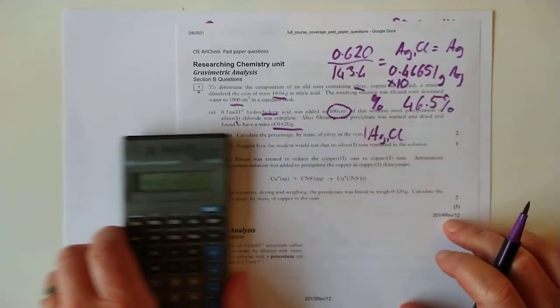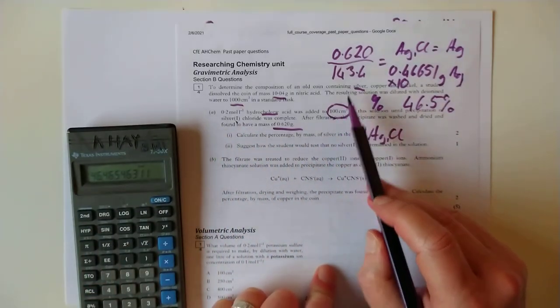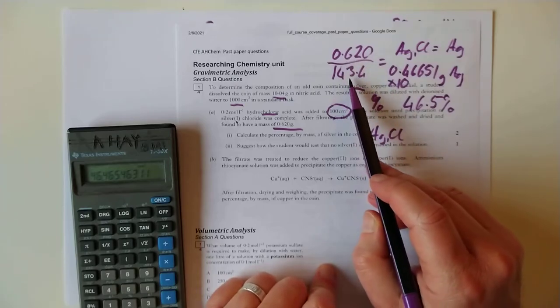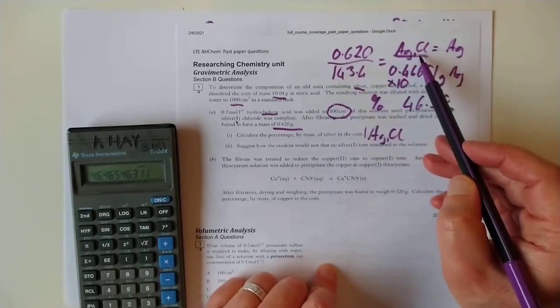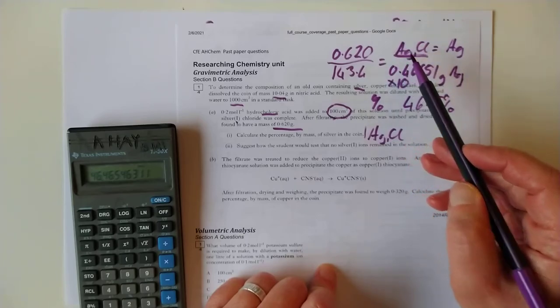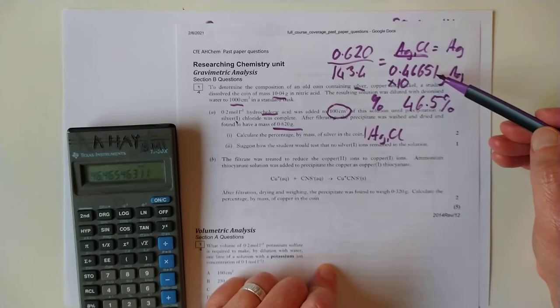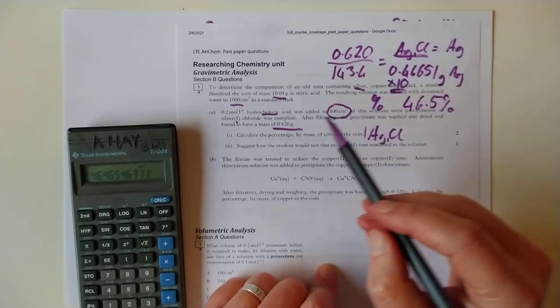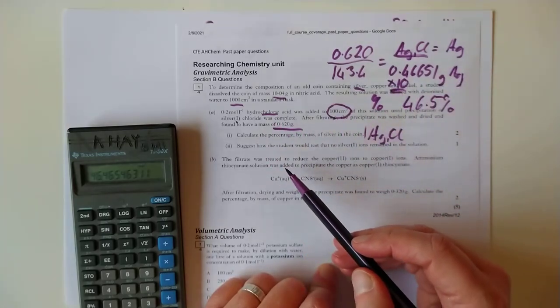If you're going to take it to three significant figures. So 46.5% silver in that coin. Quick recap there, guys. What did I do? I took the precipitate, turned it into a number of moles. I then worked out from the formula of the precipitate how many moles of the actual chemical that we're interested in, which was the silver.